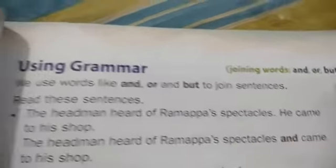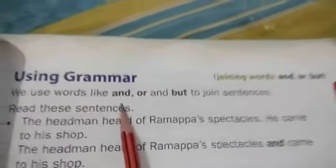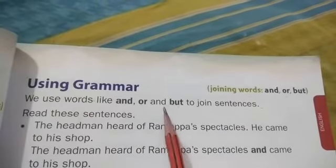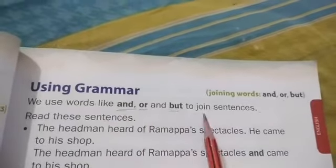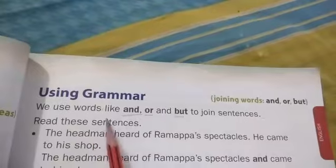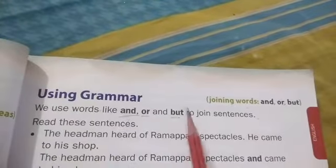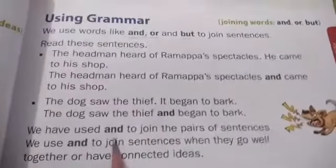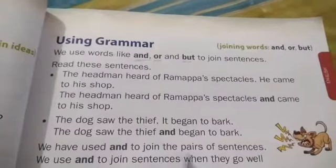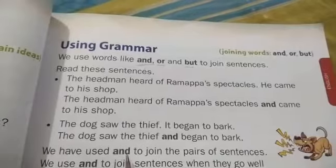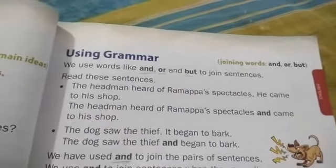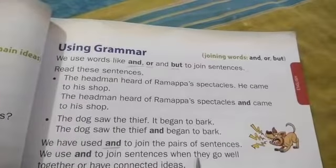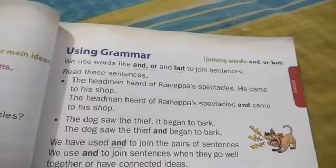And, or, but. We use words like 'and', 'or', and 'but' to join sentences. We have used 'and' to join the pair of sentences. We use 'and' to join sentences when they go well together or have connected ideas.